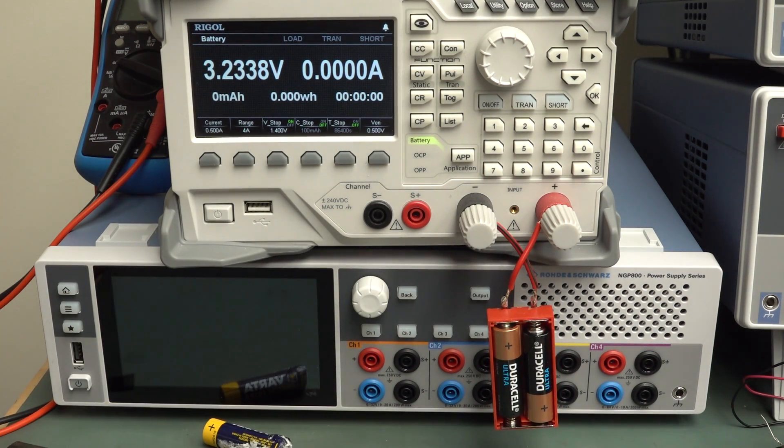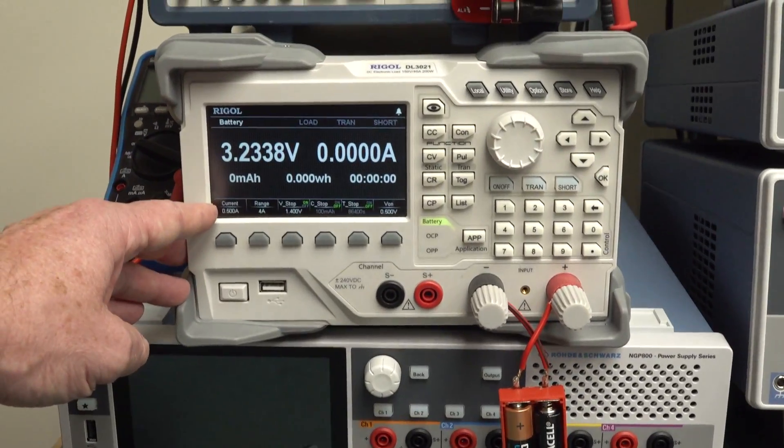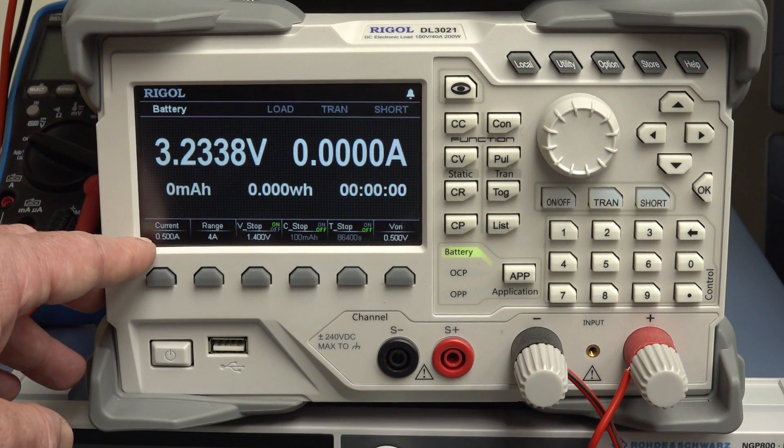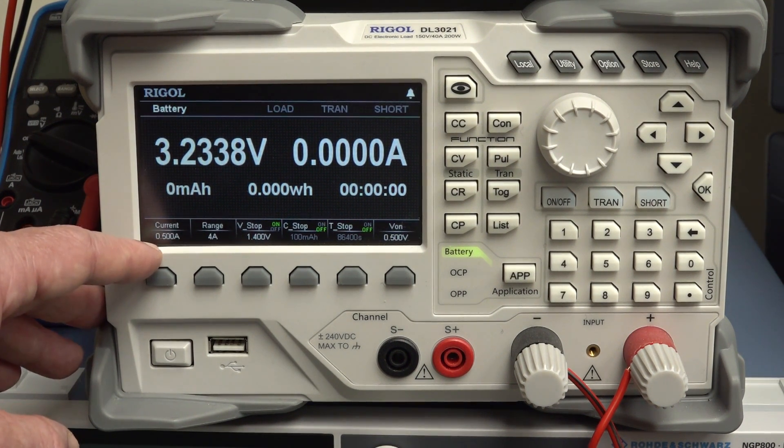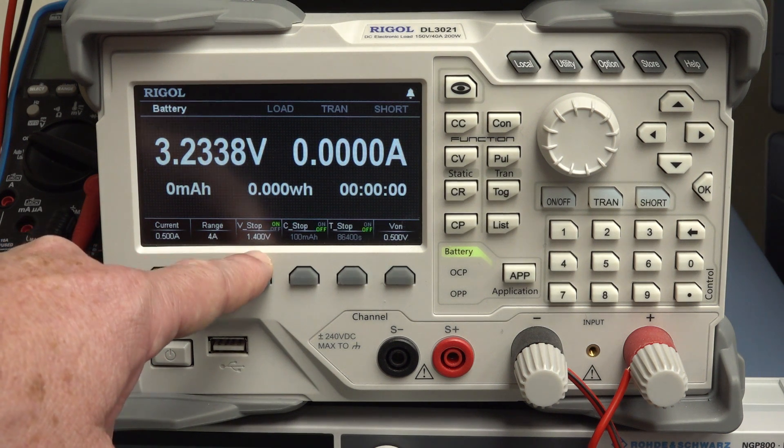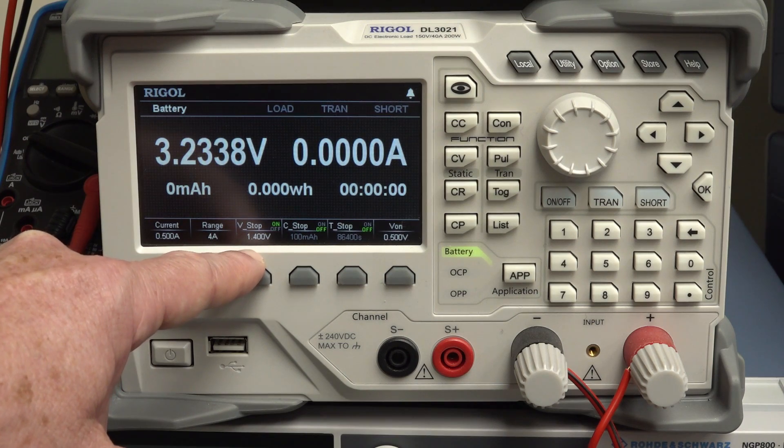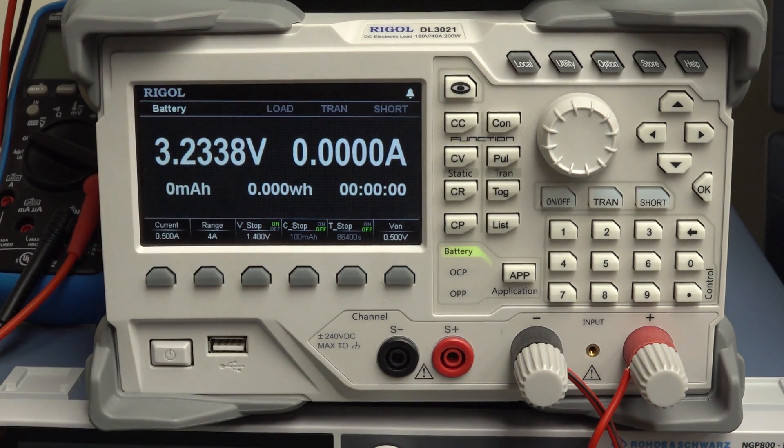So anyway, I don't want to discharge these slowly. So I'm going to, in this particular case, do 500 milliamps to make it faster to actually discharge these, because I've got 13 different pairs to do. I'm going to set my stop voltage. I'm not going to set a stop capacity. I'm only going to set a stop voltage, normally 1.4 volts.